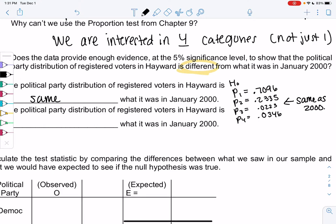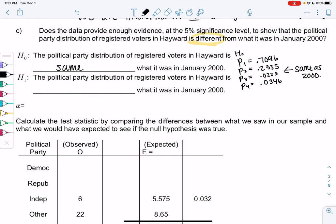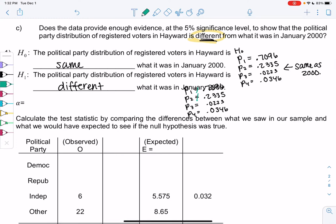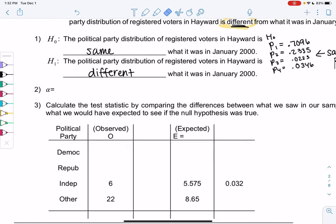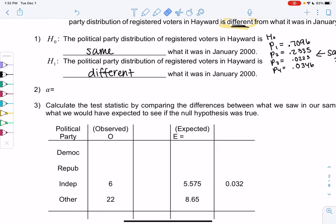As the hypothesis tests get a little more complicated, it's often easier to just write sentences. For H1, what we're trying to prove is that they're different. So the political party of registered voters is different than what it was in 2000. This is why we can't quite do an equation - because we're just saying it's different, we don't know what's different. Maybe P1 is different and P2 is different, but then P3 and P4 could be the same. We don't know which ones changed and which ones didn't. That's why it's just easier to write it in words.